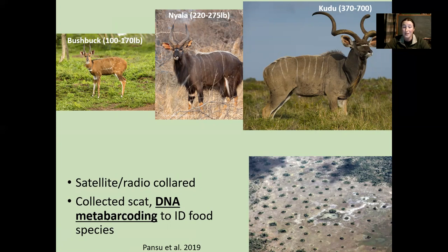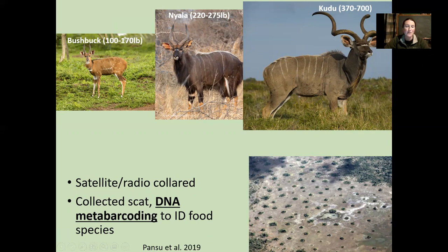They compared DNA from the fecal matter to a databank of genetic sequences using DNA metabarcoding to figure out exactly what these individuals ate within a few hours. This is really new, relatively non-invasive technology. Previously, to explore what an animal was eating, you actually had to look at its stomach contents — obviously not ideal. This method is minimally invasive and allows ongoing study of the animals' habits rather than just one moment in time.